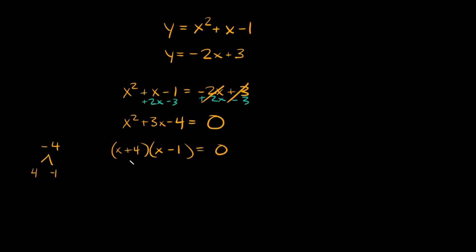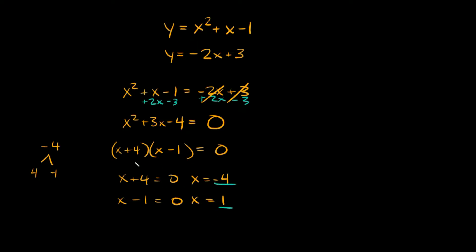The last thing we have to do is set each of our parentheses equal to 0. So we have x plus 4 equals 0 and x minus 1 equals 0. On the first one, x equals negative 4, and on the second one, x equals positive 1. So you get two answers — one for each set of parentheses. Since we got two answers for x, we're going to get two answers for y.